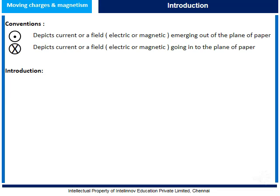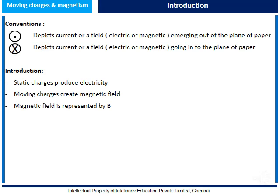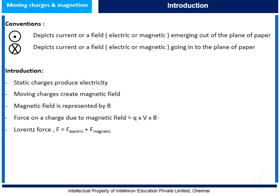Some important points about moving charges and magnetism: Static charges produce electricity, whereas moving charges create a magnetic field. Magnetic field is represented by the letter B, and the force on a charge due to magnetic field is equal to Q times V times B, where Q is the charge, V is the velocity, and B is the magnetic field. Lorentz force states that the total force on a charge is the sum of the force due to the electric field and the force due to the magnetic field. The magnetic field force can also be written as QVB sin θ, where θ is the angle between the velocity vector and the magnetic field.